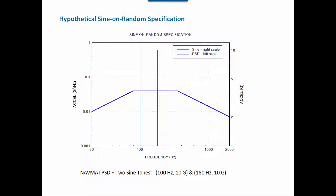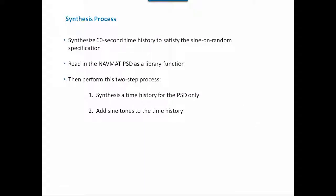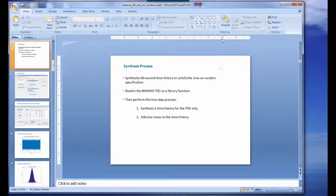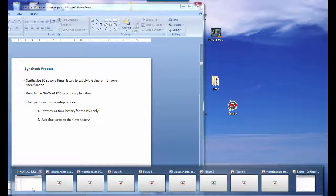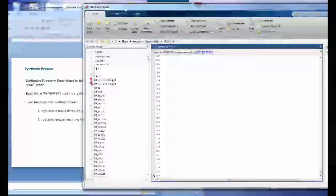We're going to synthesize a 60-second time history to satisfy the sine-on-random specification in two parts. First, we read in the NAVMAT PSD from our MATLAB library and synthesize a time history satisfying only the power spectral density. Then, as a follow-on step, we add the two sine tones to that time history using our Vibration Data GUI package.